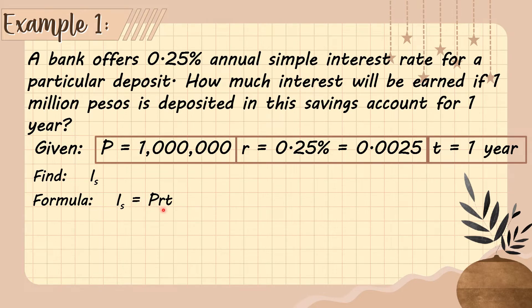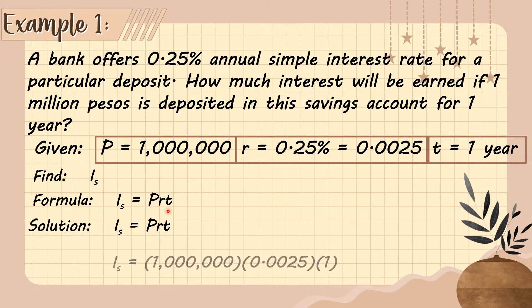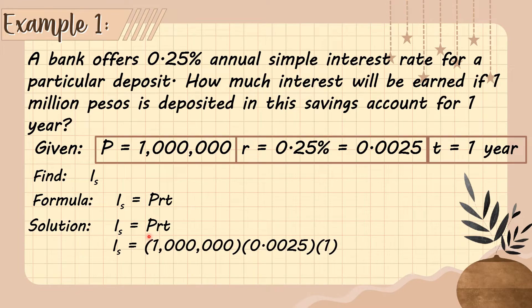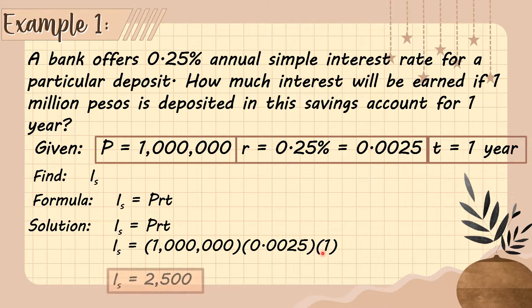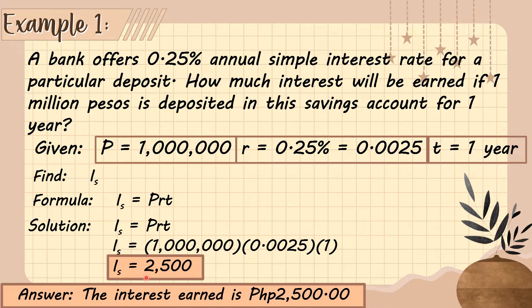Using the formula I_s = P × r × t, we substitute the given values: 1,000,000 × 0.0025 × 1. So the simple interest is 2,500. The interest earned is 2,500 pesos in one year.